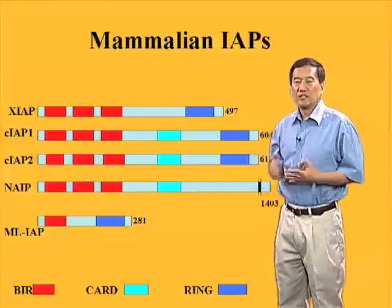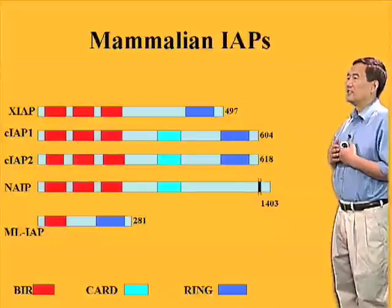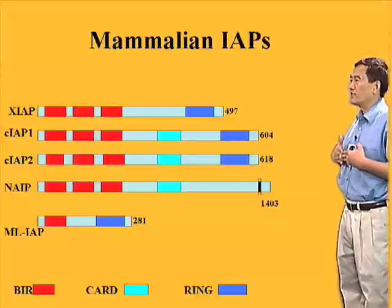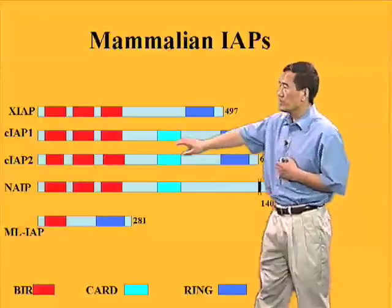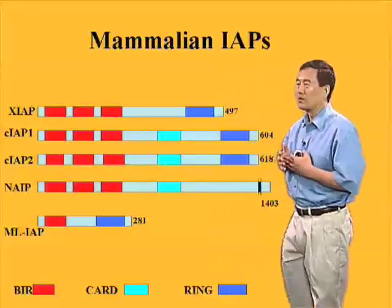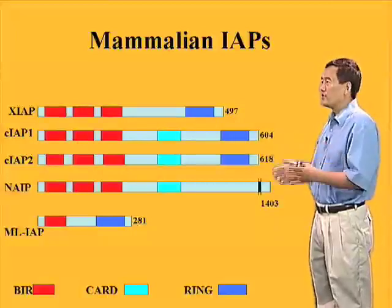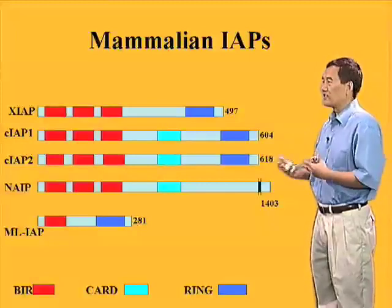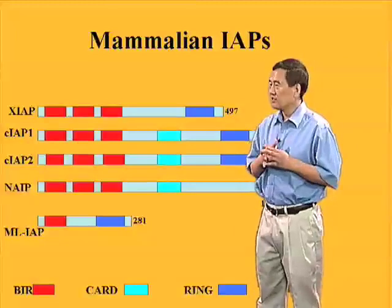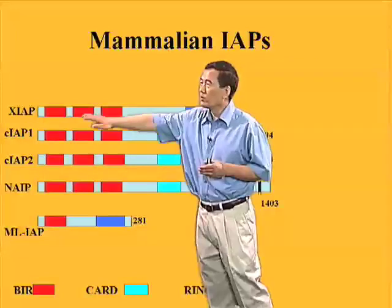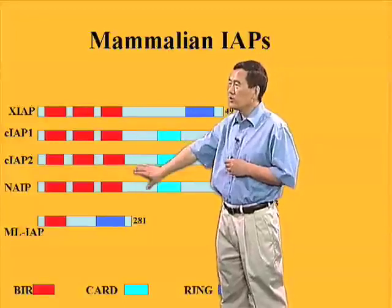This gives a good opportunity to introduce the IAP family proteins. CIP1 and CIP2 were first isolated in the TNF receptor complex. In the human genome, we now know there is a whole family of IAP proteins. They all share a signature domain called BIR domains — baculovirus IAP repeat domains — because the function of IAPs was first described in a baculovirus insect cell system. Both XIAP, CIP1, CIP2, and NAIP have three BIR domains at their N-terminus.